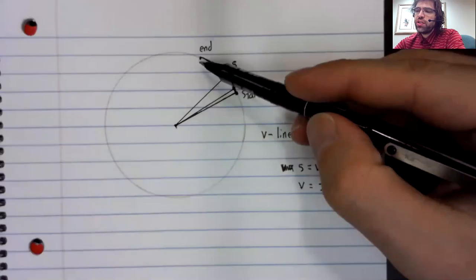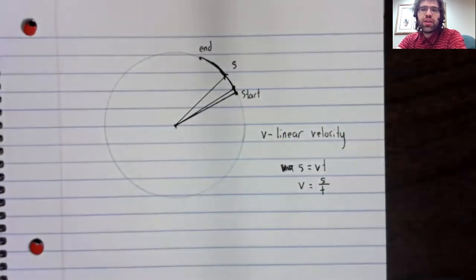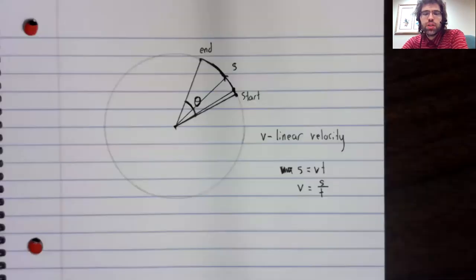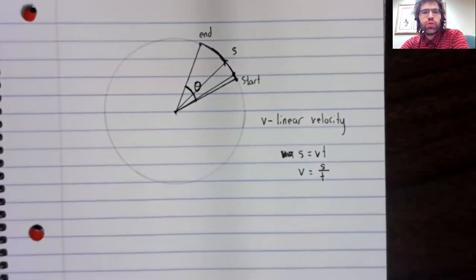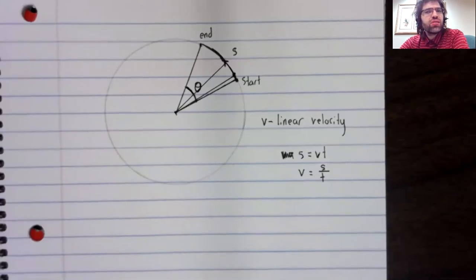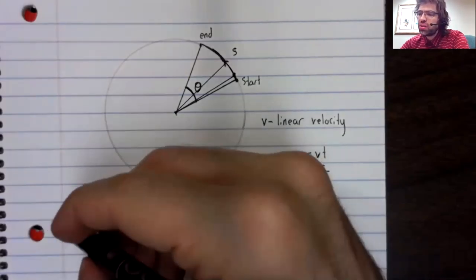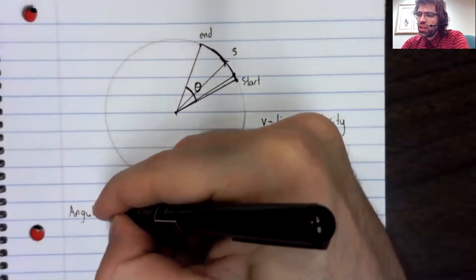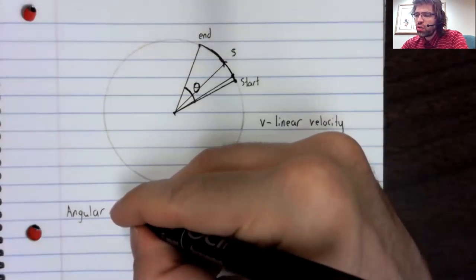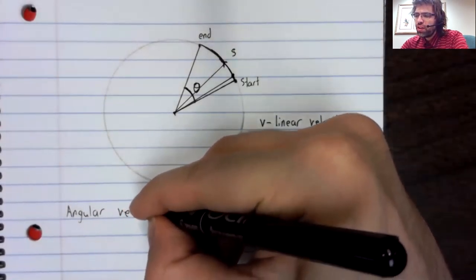Until you reach the end point, when the angle is as big as it's going to get. So, as time passes, the angle you create changes. And it makes sense to ask how quickly the angle changes. That brings us to the notion of angular velocity.